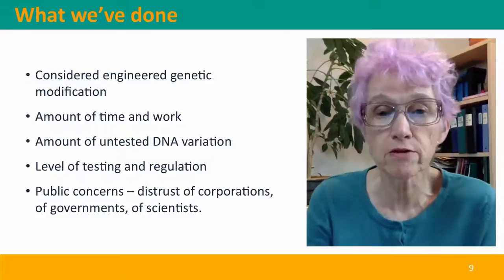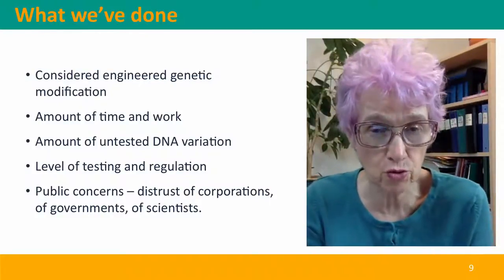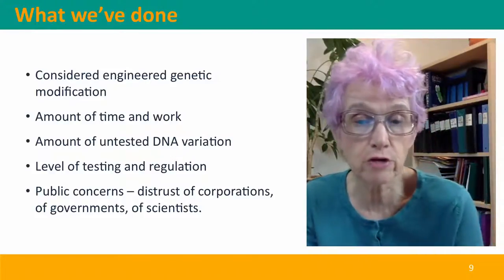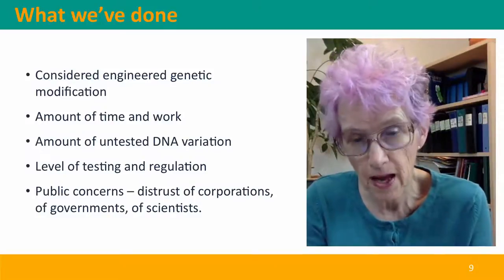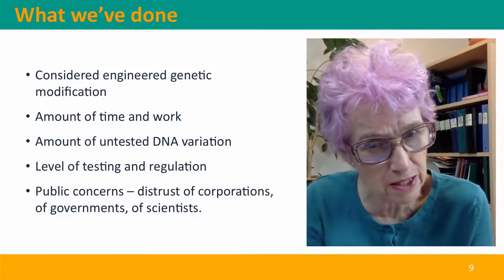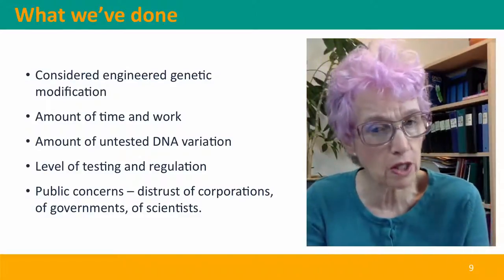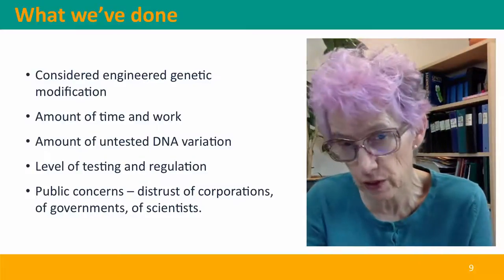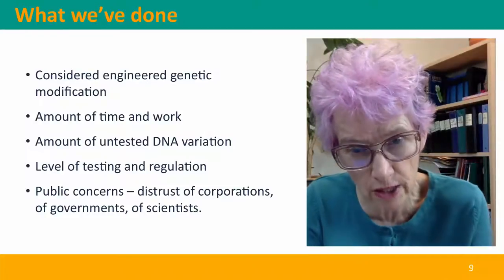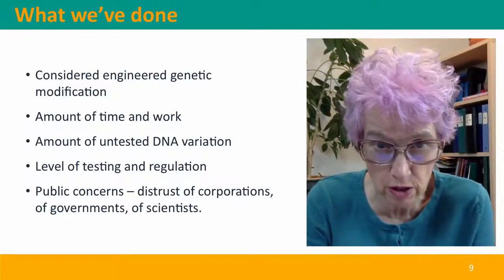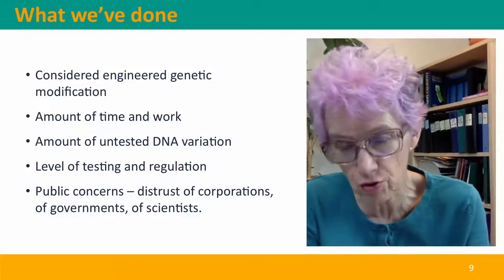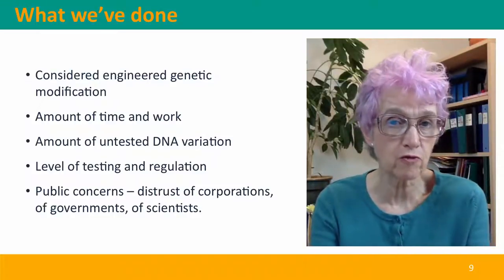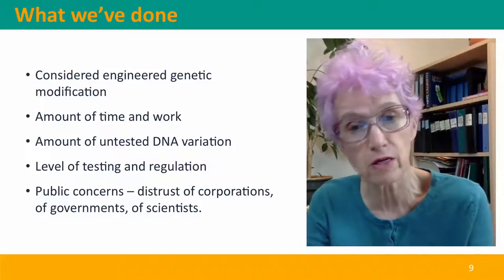When we consider genetic engineering modifications in contrast to the procedures required for conventional breeding, in terms of the amount of time, work, and expense, the engineered genetic modifications are far easier. In terms of the amount of untested variation in the plants, they're actually also much better, because we start with a single plant with known properties and change one gene. Whereas in conventional breeding, there's this enormous background of mutations, especially if genes are brought in from wild strains or if the plant has been irradiated. Almost all conventionally bred plants have treatment with mutagenic chemicals or radiation in their background — but the level of public concern is far higher for genetically engineered plants than for conventionally bred plants.